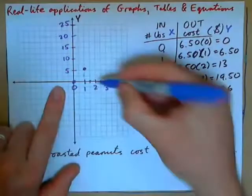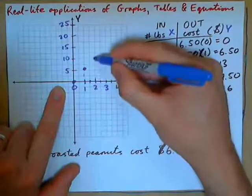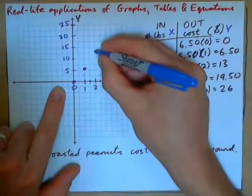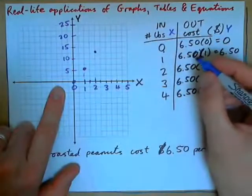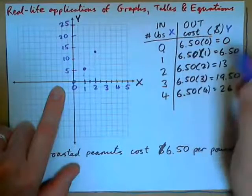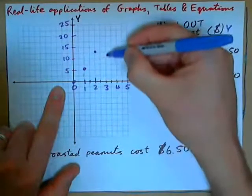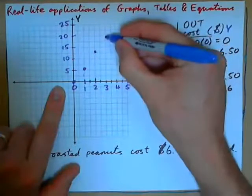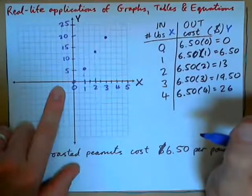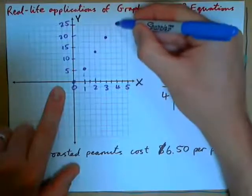Point (2, 13): X is 2, and since 15 is above and 10 is below, 13 is about there. Point (3, 19.50): 3, 19.50 is about here. And (4, 26) is about here.